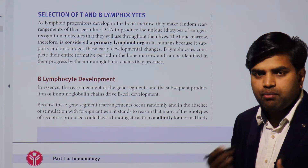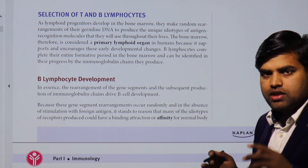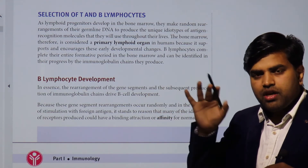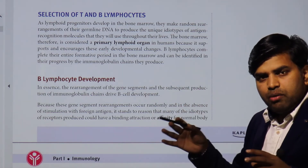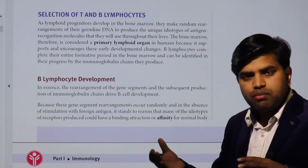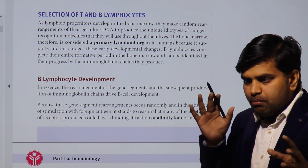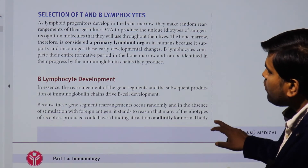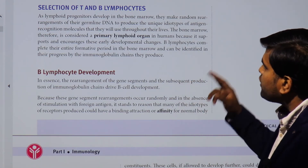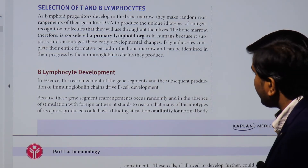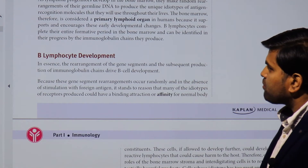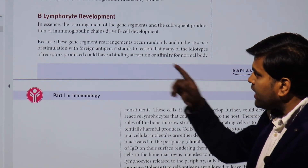T and B lymphocytes develop inside the primary lymphoid organs — bone marrow and thymus. Both T and B cells arise from a common lymphoid progenitor cell in the bone marrow. B cells mature entirely in the bone marrow before moving to the periphery. T cells form in the bone marrow, migrate to the thymus to mature, and then enter the periphery. The bone marrow is considered the primary lymphoid organ in humans.